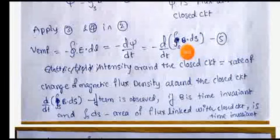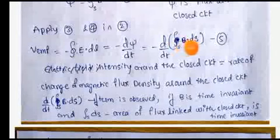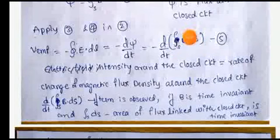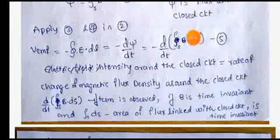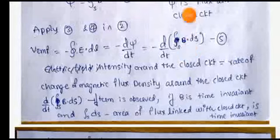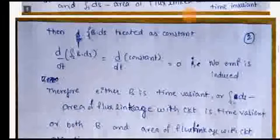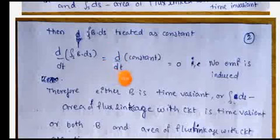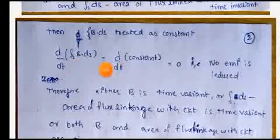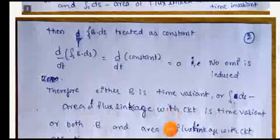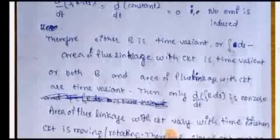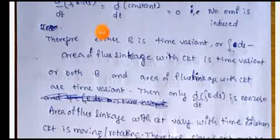If both are time-invariant, they are treated as constants. The differentiation of a constant is zero. That means no EMF is induced. So for EMF to be induced, the term d-phi by dt must be non-zero.